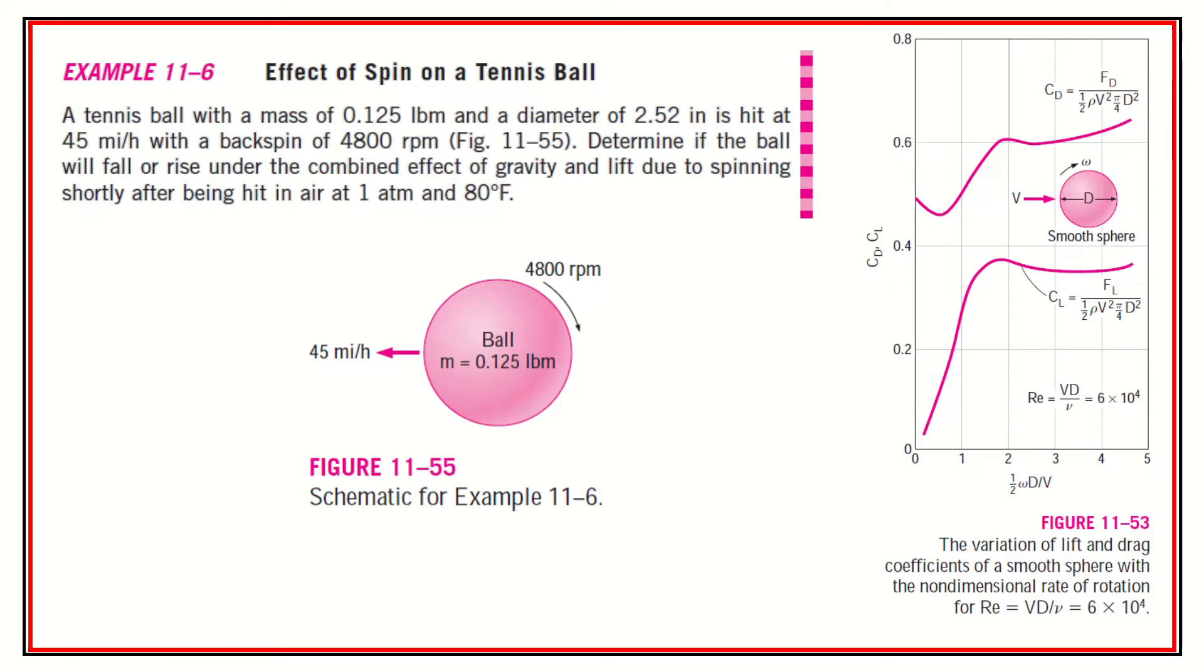The tennis ball has a mass of 0.125 pounds mass and a diameter of 2.52 inches. It is hit at 45 miles an hour with a backspin of 4,800 RPM. We're going to determine if the ball will fall or rise under the combined effect of gravity and lift due to spinning, shortly after being hit in the air at one atmosphere and 80 degrees Fahrenheit.